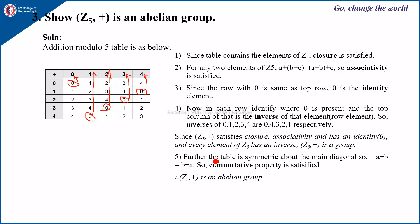Further, the table is symmetric about the main diagonal — the elements on either side of the main diagonal are the same, which means the table and its transpose are identical. This shows that the commutative property is satisfied. Therefore Z5 with addition is an abelian group. We will see more examples in the next video.